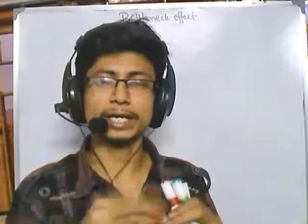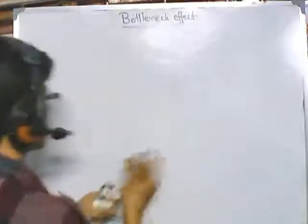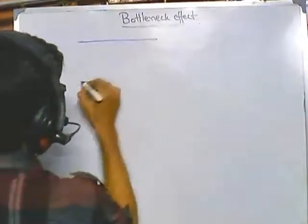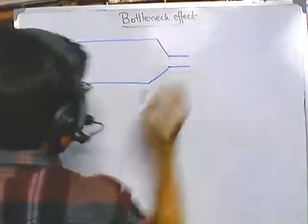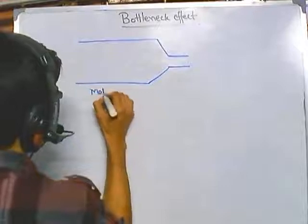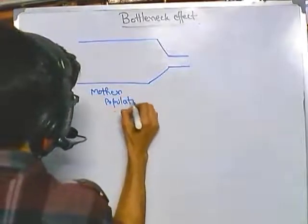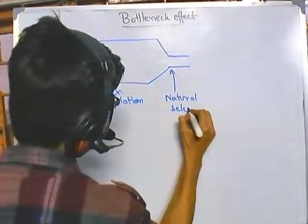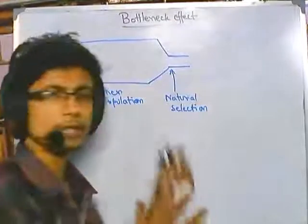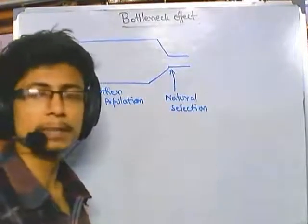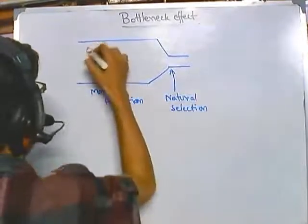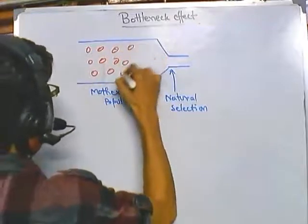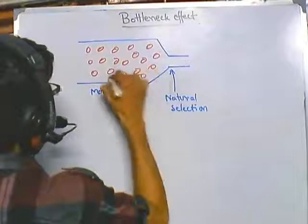Due to any kind of environmental hurdle, a population is squeezed through just like a bottleneck, so that 50% or more of the individuals are reduced. To illustrate this, if we draw the system like a bottleneck: there is a mother population, and due to a hurdle placed here — such as limited habitat, limited food resources, natural calamity, or other factors — the organisms squeeze through the bottleneck.